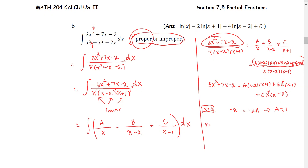Next, pick a number convenient to find the remaining coefficients. Let x equal negative 1. The left-hand side becomes 3 minus 7 minus 2. The right-hand side: the expression for A will be 0, and the expression for B will be 0 as well, leaving negative 1 times negative 3 times C, which is 3C. The left side equals negative 4 minus 2, that's negative 6, so C equals negative 2.